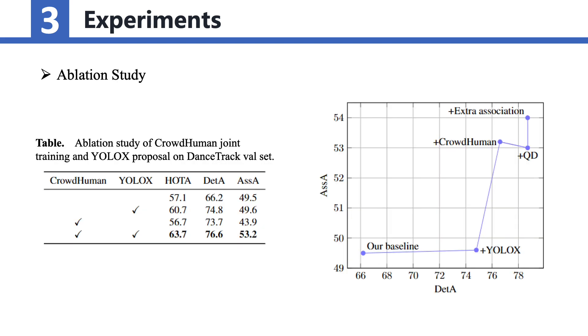In our ablation study, we have identified that the incorporation of YOLO-X proposals and crowd-human joint training significantly contribute to the final performance of MOTR V2. YOLO-X proposals consistently improves all three metrics: higher-order tracking accuracy, detection accuracy, and association accuracy, regardless of whether the crowd-human dataset is used. This highlights the effectiveness of utilizing YOLO-X predictions as proposal queries in enhancing the overall performance.